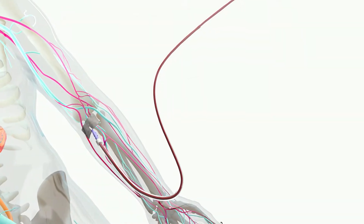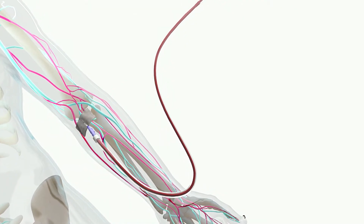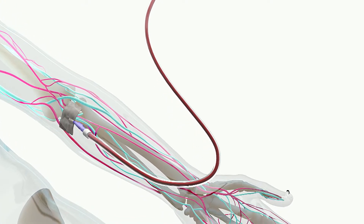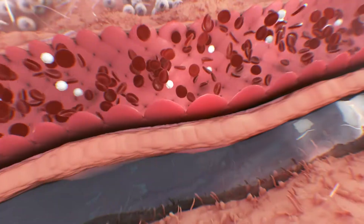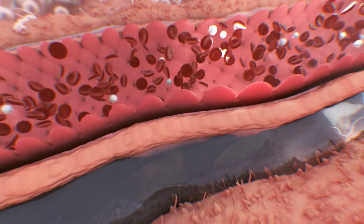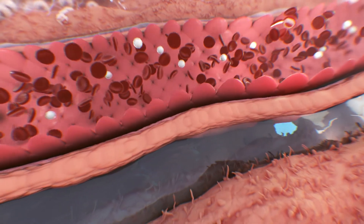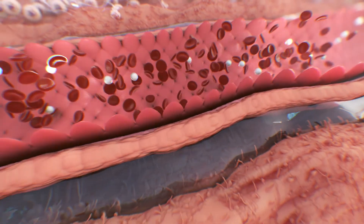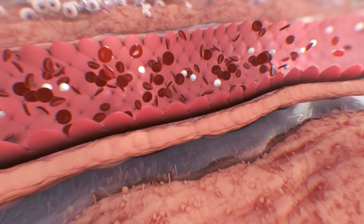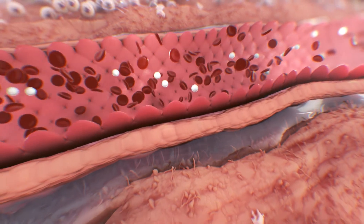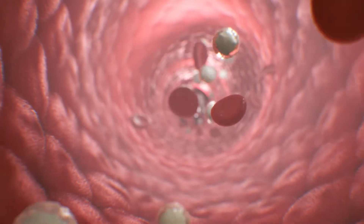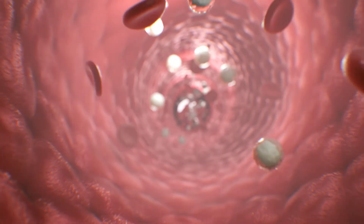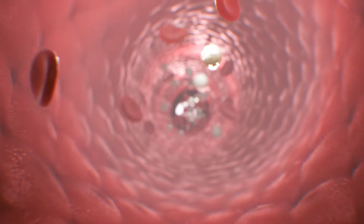Removal of intravascular fluid during hemodialysis reduces blood volume, leading to an increase in the hematocrit. This causes a shift of interstitial fluid into the vascular space known as plasma refill. As plasma refill occurs, blood volume increases and hematocrit decreases. Therefore, changes in blood volume and hematocrit can be used as indicators of effective hemodialysis.